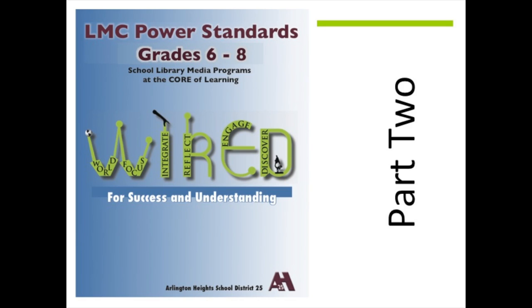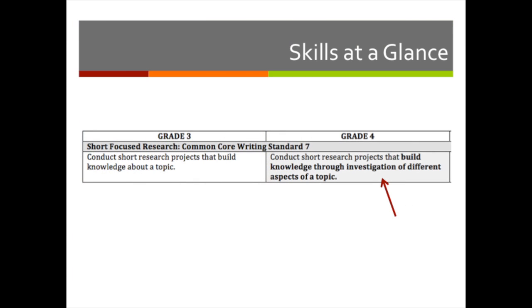Now let's take a look at the organization of this booklet. Please turn to the section labeled Skills at a Glance that follows the introduction—it will be approximately five pages into the document. The section entitled Skills at a Glance allows you to track the progression of Common Core Benchmark skills from Kindergarten to Grade 8. The text in bold font indicates a word or phrase that was changed or added to the benchmark from the previous grade, building rigor and depth from one grade to the next. A quick glance at the table will give you a sense of what students accomplished in previous grades and what they will be expected to accomplish in the following grades.